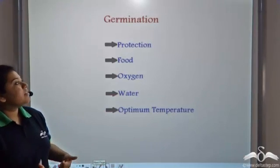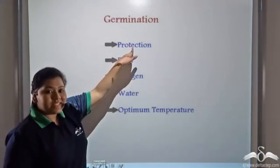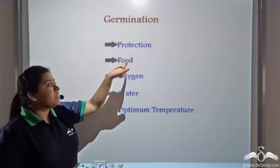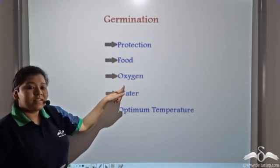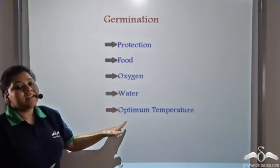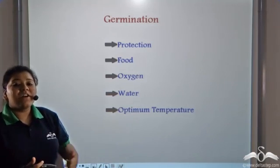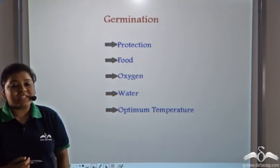For germination, the embryo has to be protected, it needs to be nourished, it requires oxygen and it requires water and optimum temperature for proper germination.